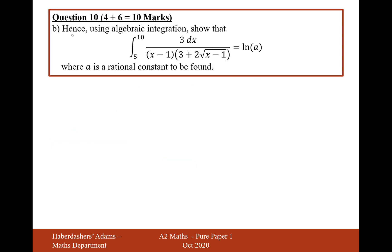Let's now move on to part B. So hence, using algebraic integration, show that this integral here is equal to ln A. So let's bring in what we've found from before. So it's going to be the integral from 3 to 2 of 6 over u(3 plus 2u) du.